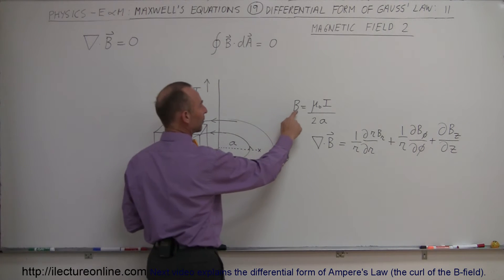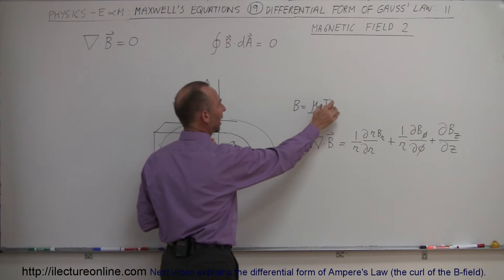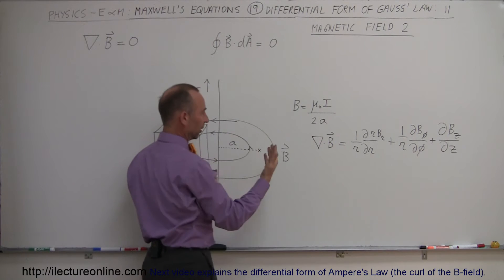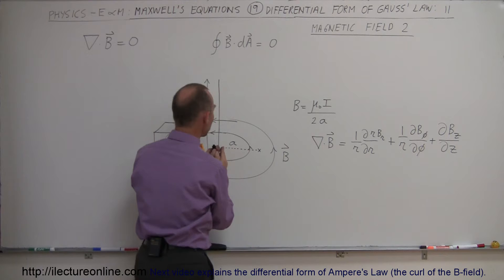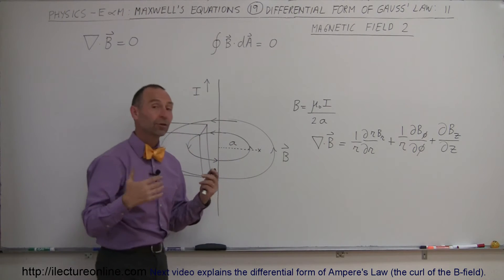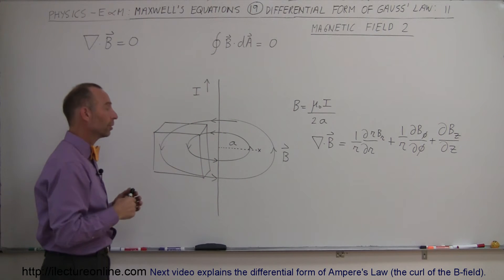And the equation that indicates the strength of the magnetic field is equal to mu sub naught times the current, the bigger the current the bigger the magnetic field, divided by two times a, a being the distance away from the wire. The greater the distance the weaker the current.